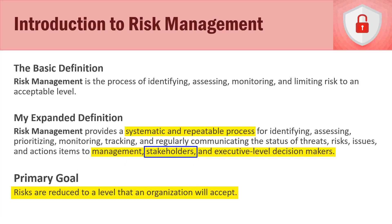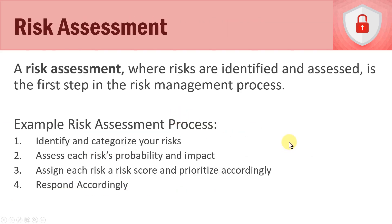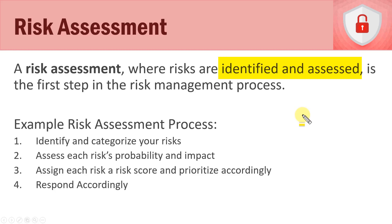A risk assessment is where risks are identified and assessed. This is where we get down to work — we identify all potential risks and then assess them with key stakeholders. We look at our IT infrastructure, servers, personnel risks like social engineering, and external risks. This is the first step in the risk management process: identify and assess risks so we can determine how to properly manage them.